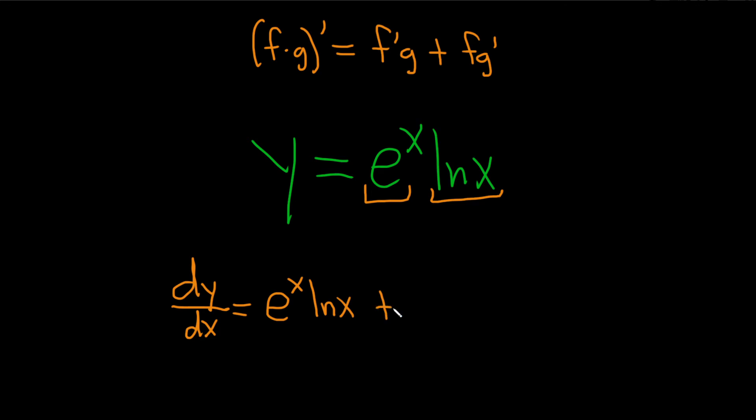And then plus the first, which is e to the x, times the derivative of the second. Well, the derivative of ln x is just 1 over x.